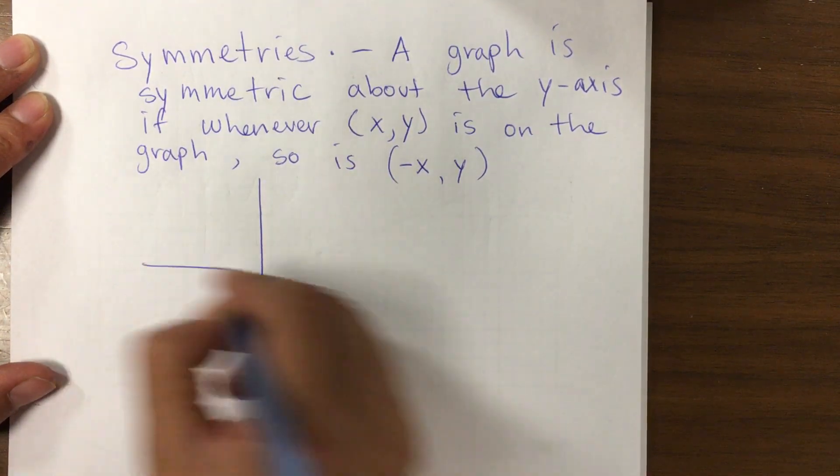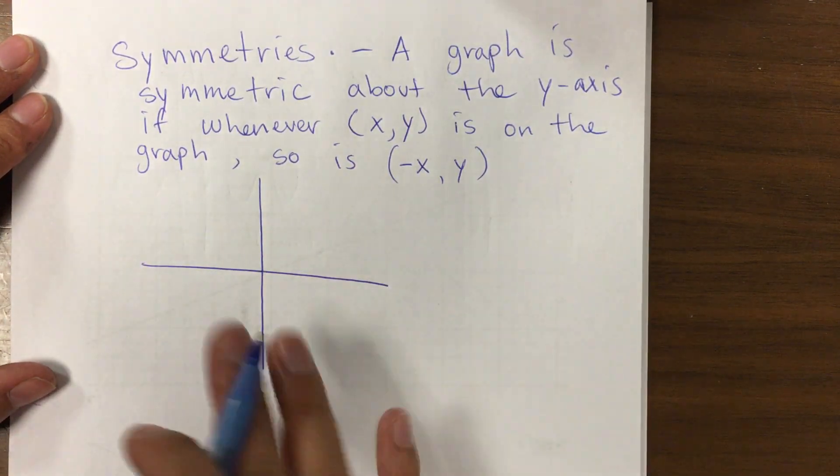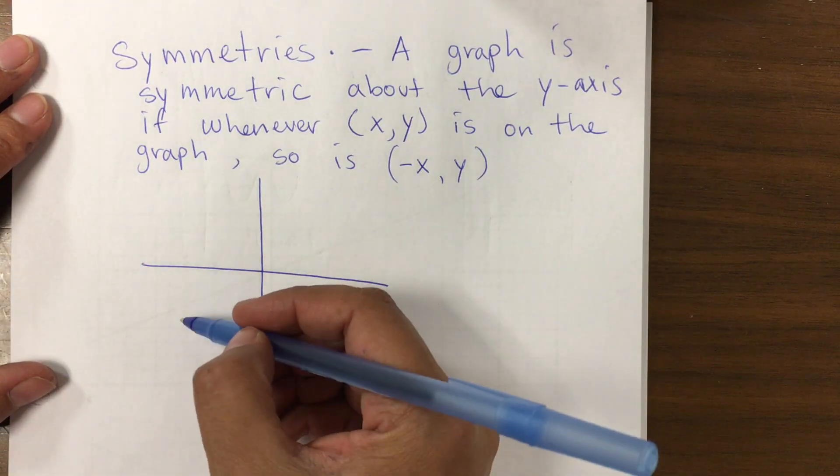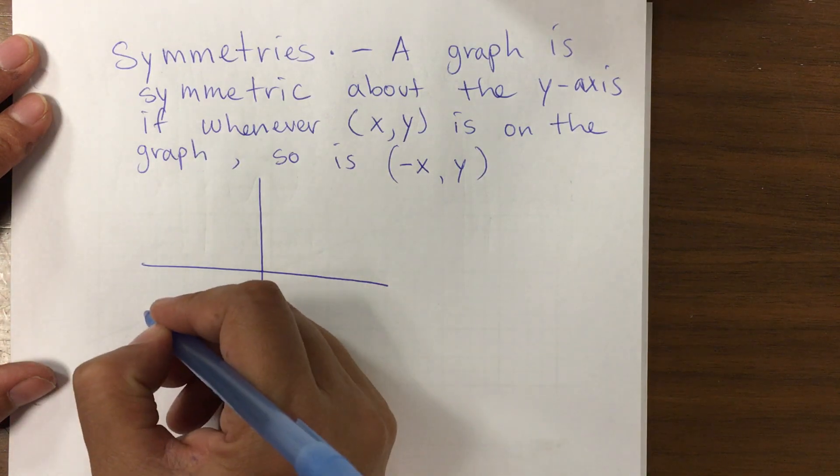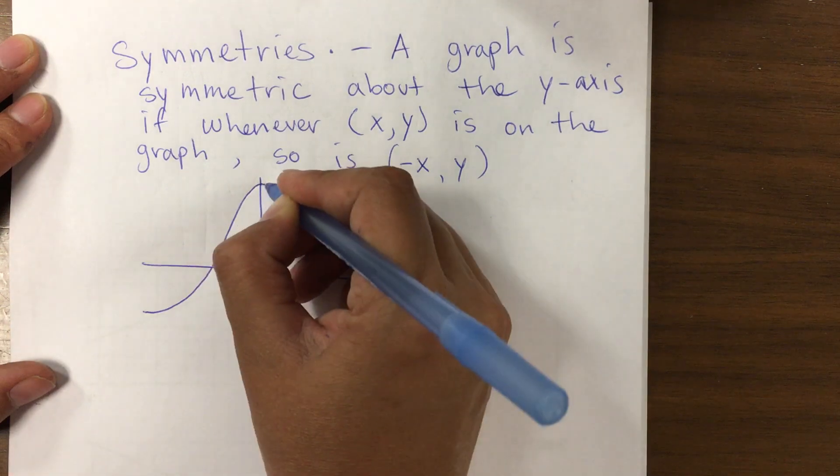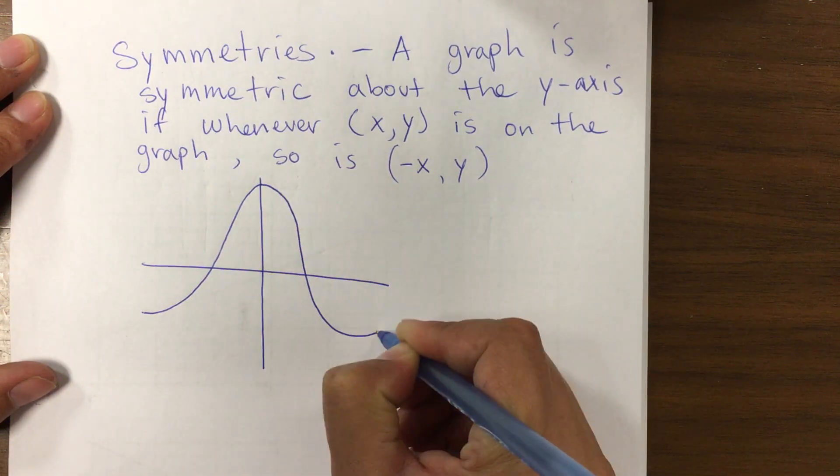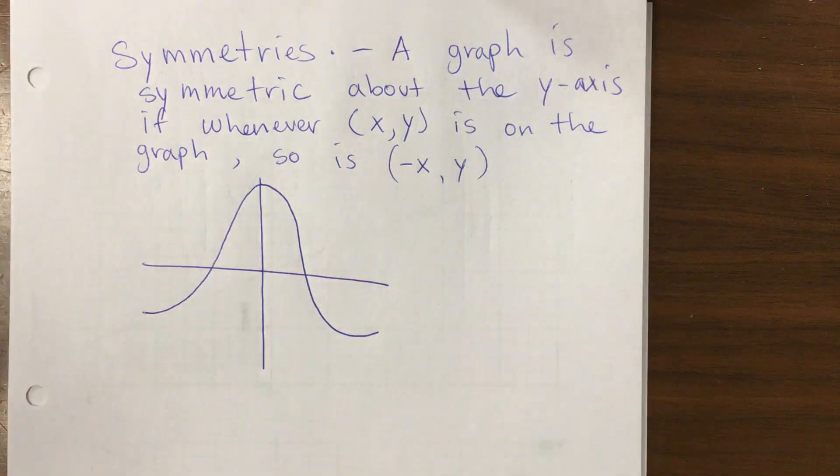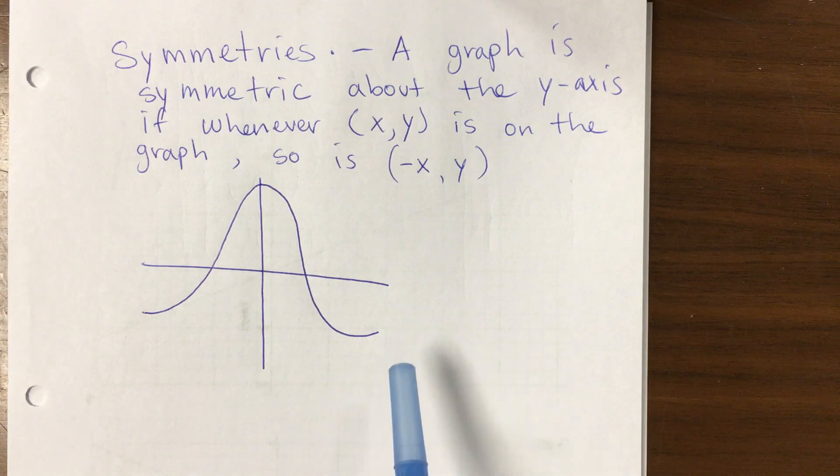If whenever (x,y) is on the graph, so is (-x,y). So what does that mean? If we have a graph, it simply means that...